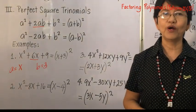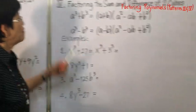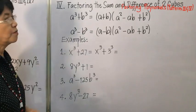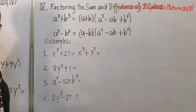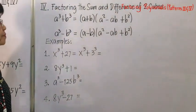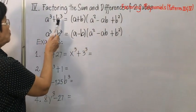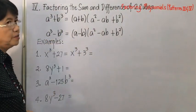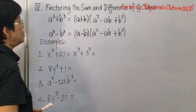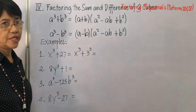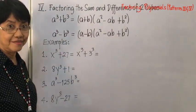For pattern number four, we have factoring the sum and difference of two cubes. We have a cubed plus b cubed, and the factors are a plus b, times a squared minus ab plus b squared.